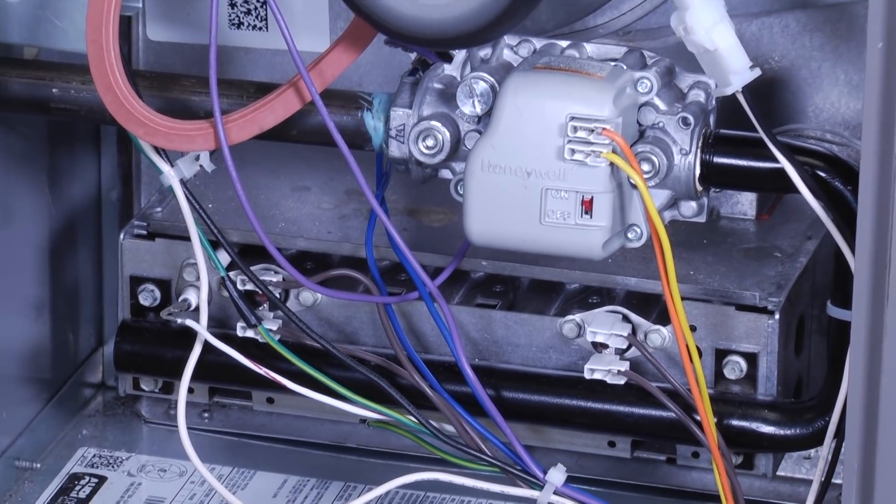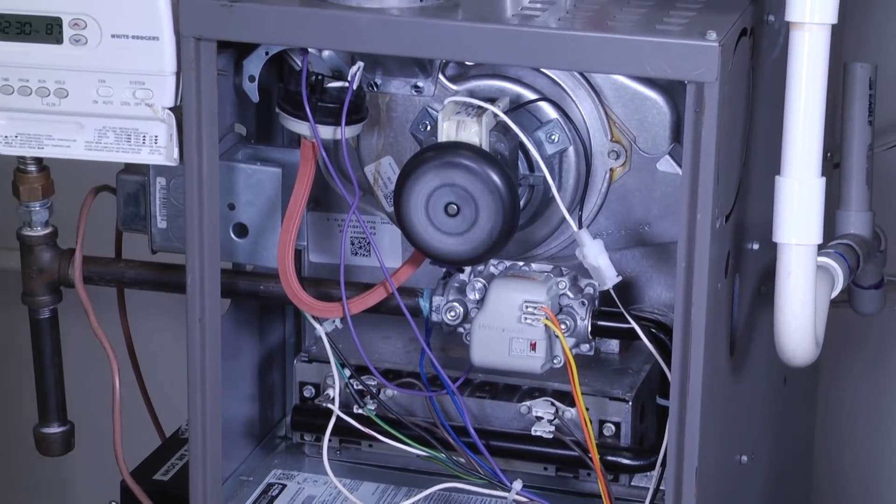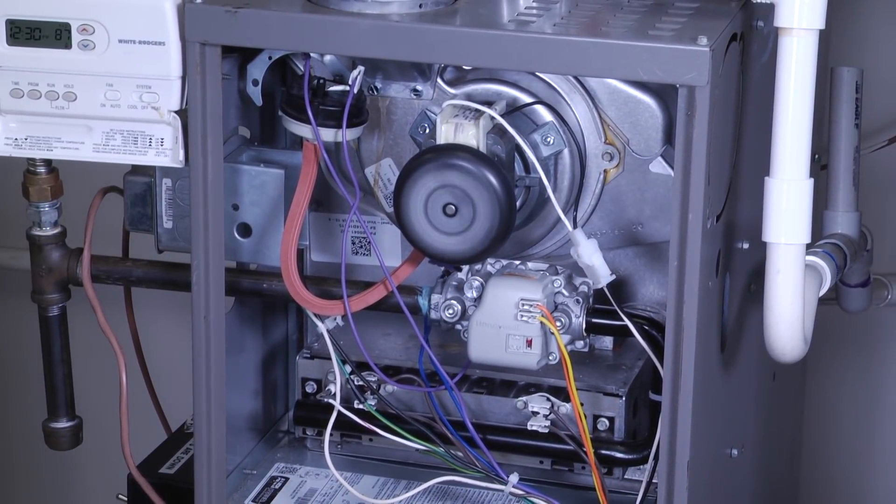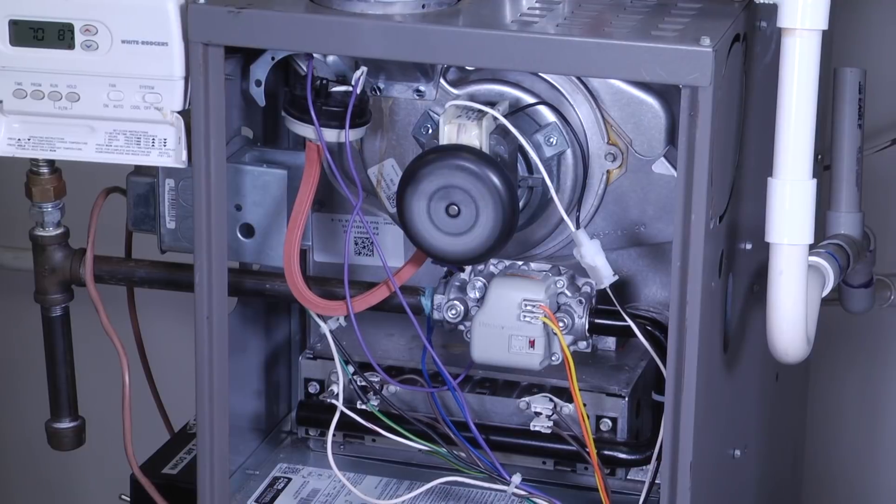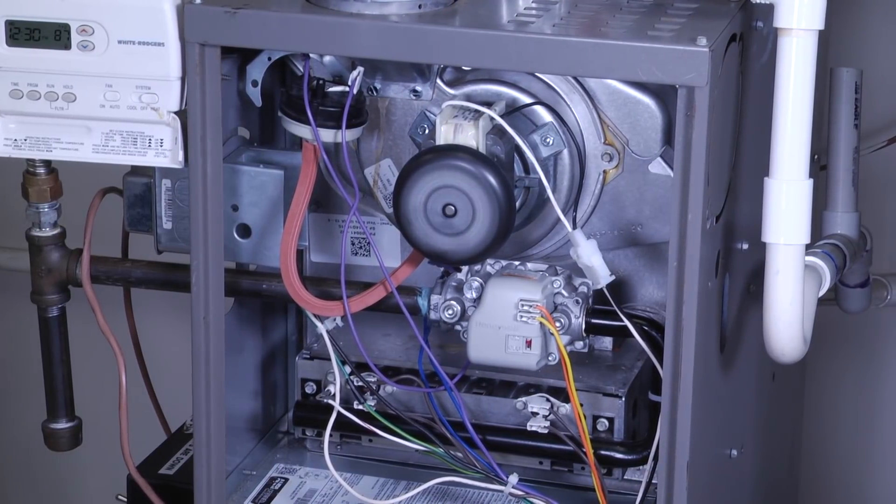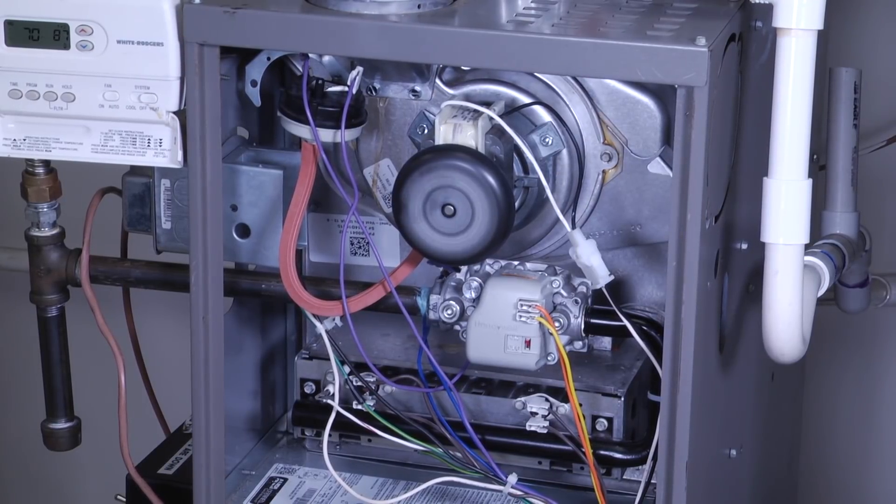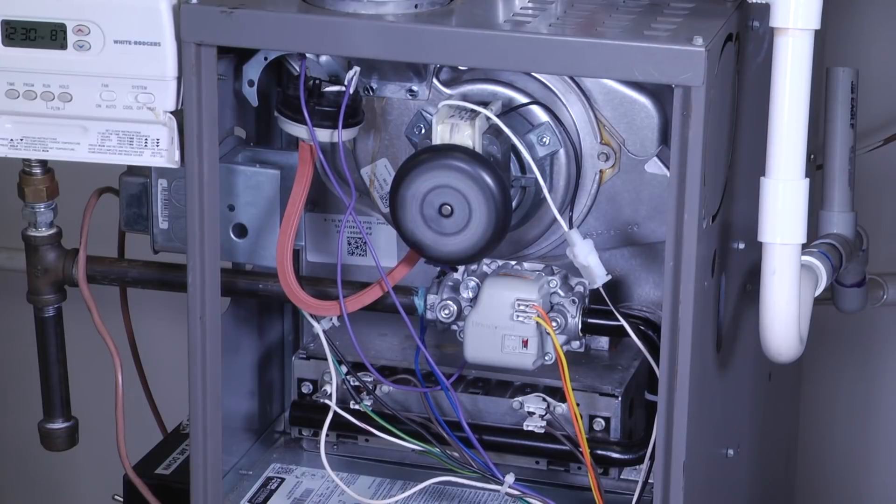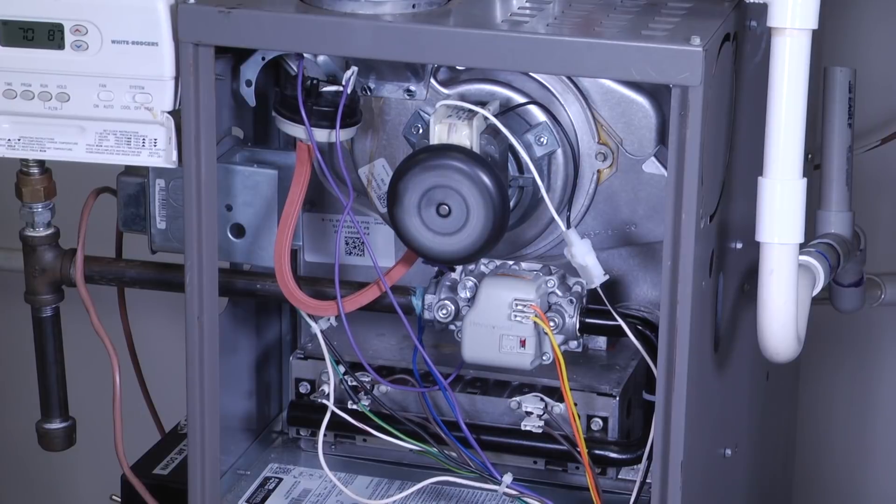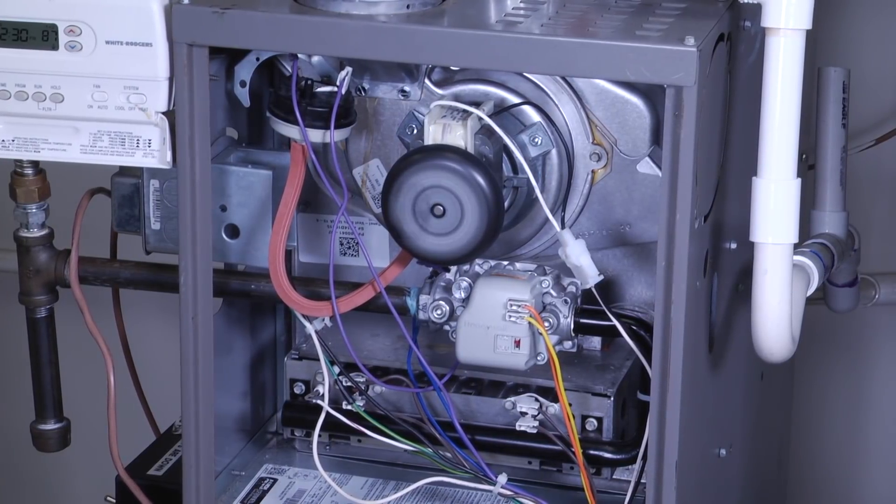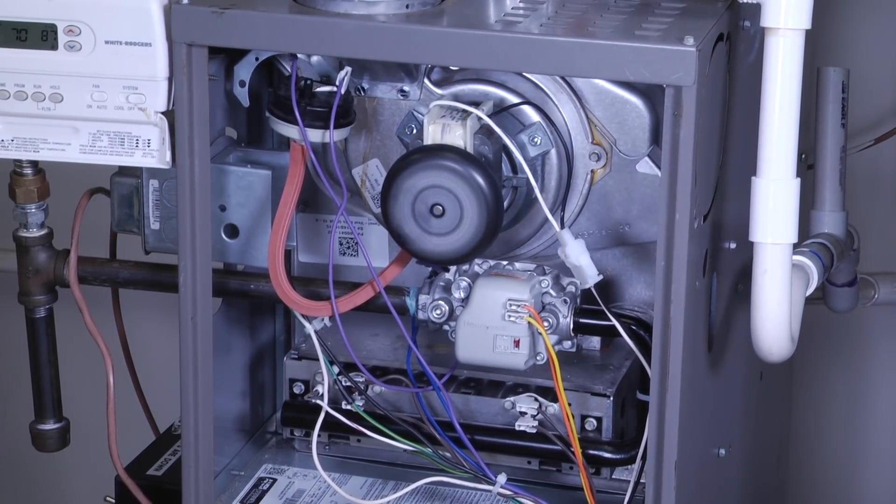Our flame sensor is there on the opposite end to prove that we've got a flame and it's going to send the signal to the board, letting them know that everything's working and now we need to go ahead and turn our blower on and start to send the air through the rest of the household. So in just a second here we'll hear our blower motor kick on. And our blower motor has kicked on and started to run.